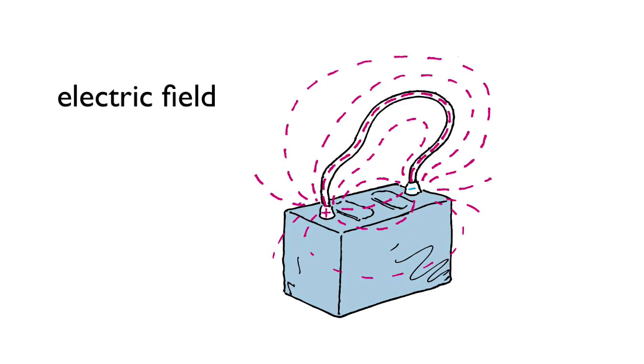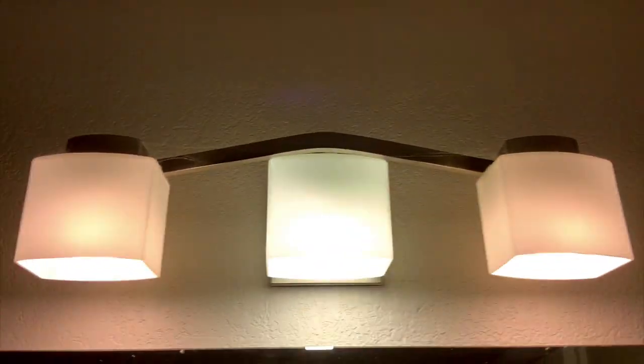But as soon as you close a switch in an electric circuit, the battery sends an electric field instantaneously through all parts of the circuit. In this way, the electric signal travels at the speed of light. This tells us that when we flick on a light switch, electric energy travels from the switch to the light bulb immediately.